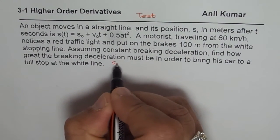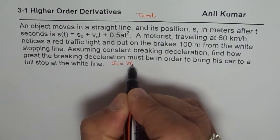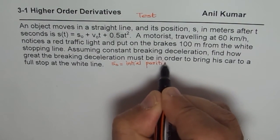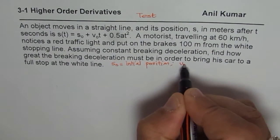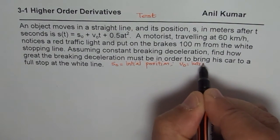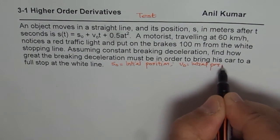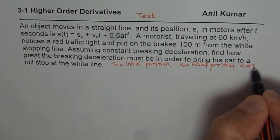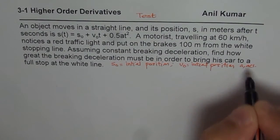So let me write, s₀ is initial position. Now this is a standard formula. v₀ is initial velocity. And a is acceleration, a is acceleration in short.